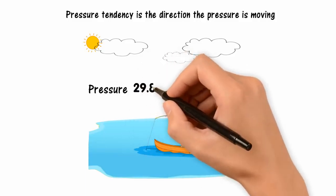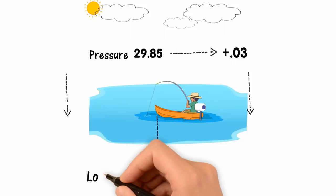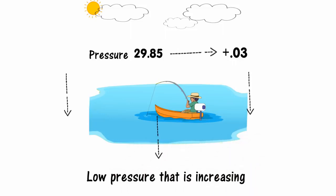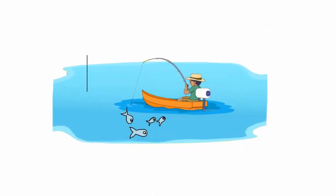For example, a pressure reading of 29.85 with a tendency of +0.03 means you have low pressure that is increasing. How does all of this affect fishing? Fish feel the weight of the air pressing on the water.